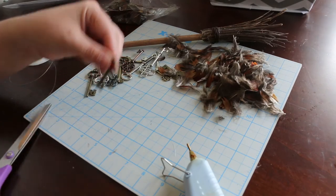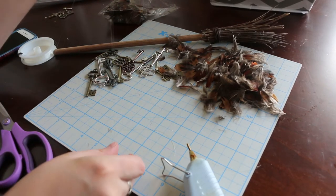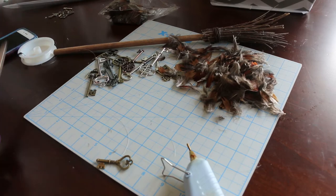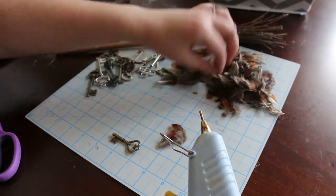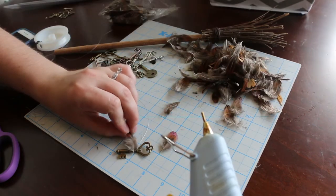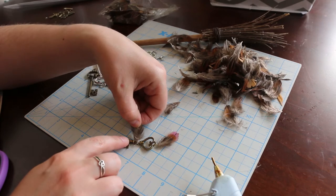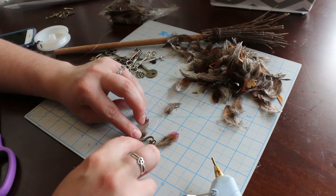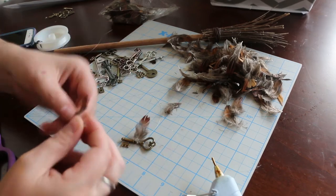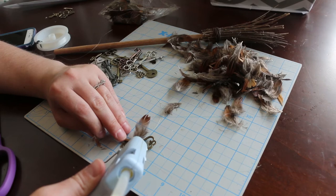Now pick out the feathers that you're going to use on your key. I just kind of made sure that they matched up a little bit. Then just take a spot of hot glue and place it right where your string is. This will both help secure the string and the feather at the same time. Then just use a second dab to glue on the second feather.